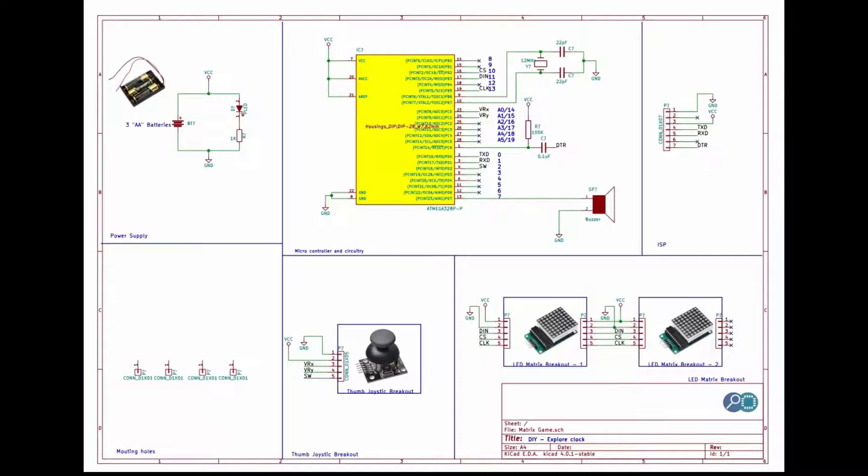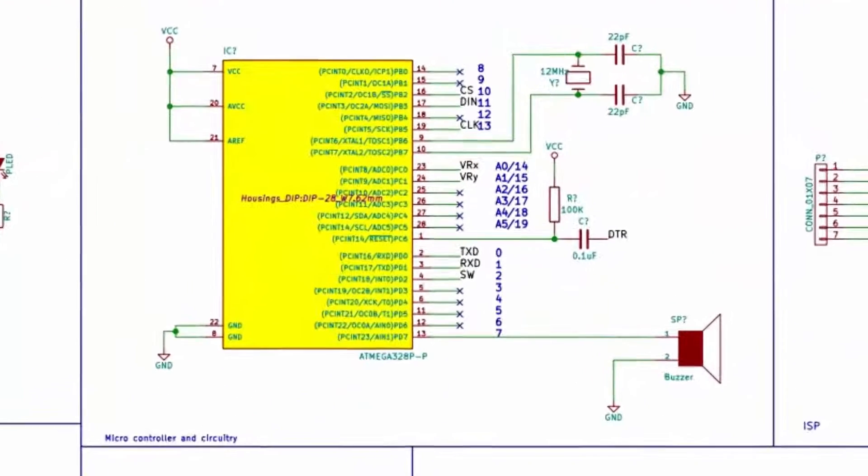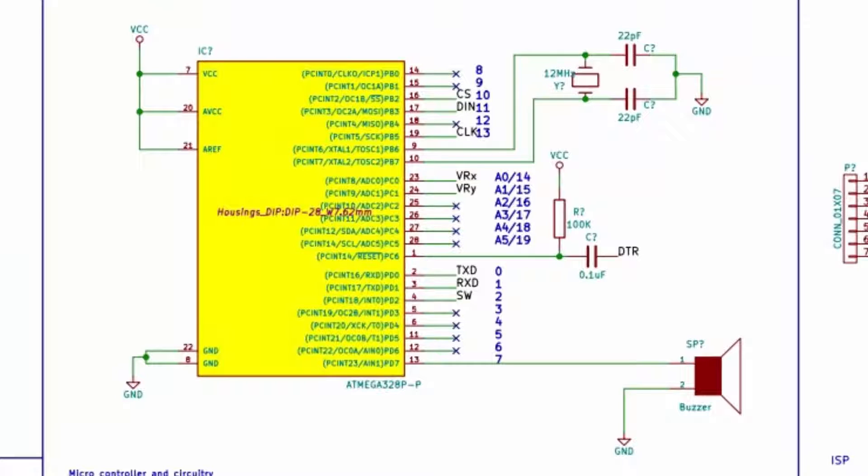Let's look at the schematic first. We have ATmega328 as the main controller which is programmed from the Arduino IDE. If you wish to use a fresh microcontroller, you need to flash the Arduino Uno bootloader with an external programmer. You may also use Arduino Pro Mini or any other Arduino boards based on ATmega328.